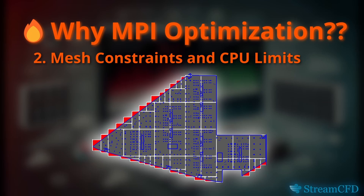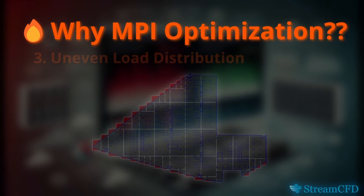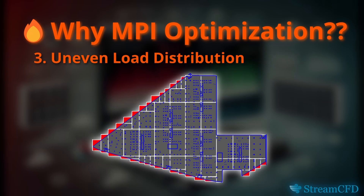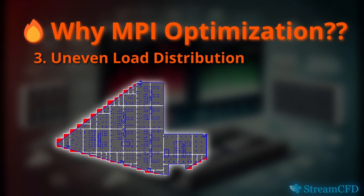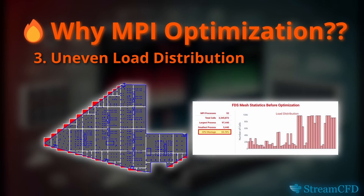Running the simulation will be a problem unless the meshes are assigned to MPI processes. Uneven load distribution: even if you have access to big machines with enough threads, there is wastage of precious computational resources. Meshes with fewer cell counts finish quickly while others with larger cell counts lag behind. This bar graph shows the number of cells each mesh has, which is directly proportional to computation time. In this case, nearly 54% of resources are wasted.